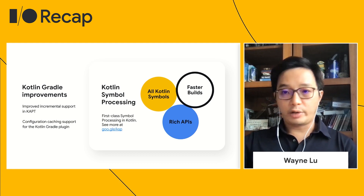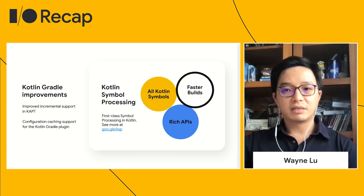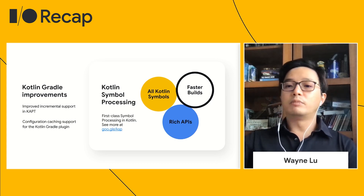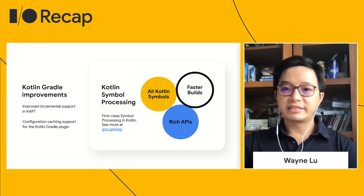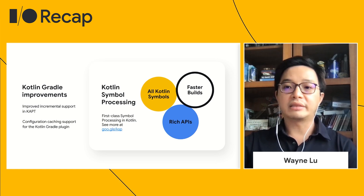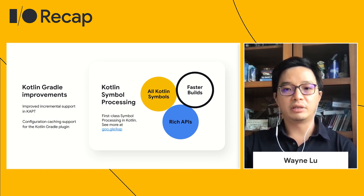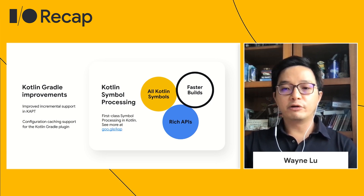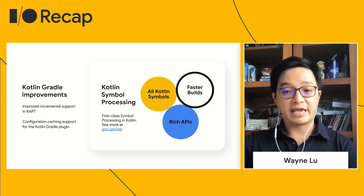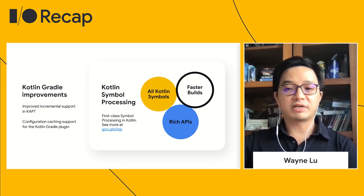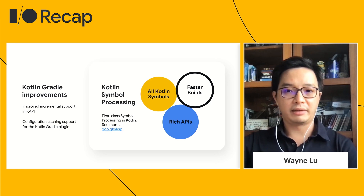Talking about Kotlin tooling, we made several improvements. First, we have made the Kotlin Annotation Processing Tool, KAPT, more reliable and incremental. Second, we have landed Gradle configuration caching in Kotlin. You can now write your Gradle build files in Kotlin script, removing the need to learn Groovy. Another improvement is Kotlin Symbol Processing, KSP. We have removed Java stub generation, hence reducing long build times.